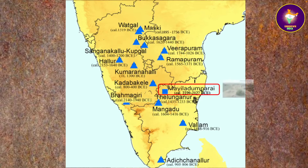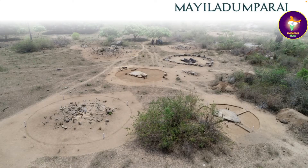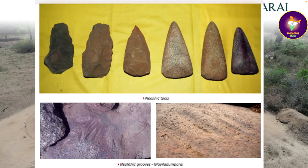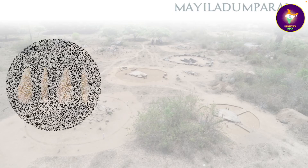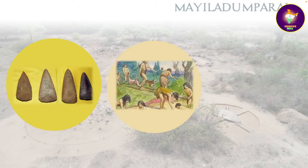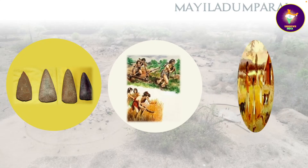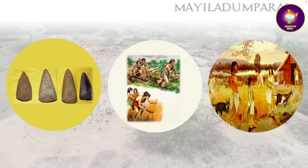Mailadumparai, which in Tamil literally means 'peacock dancing on a rock,' is a small hamlet located at the foothill about 3 km west of Togarapalli village in Bargur Taluk of Krishnagiri district of Tamil Nadu. Past excavations at Mailadumparai right from 1977 have yielded rich cultural clues of Tamil lives from the Paleolithic to historic periods. Neolithic stone tools and grooves to sharpen the tools had been found. The Neolithic age is characterized by the use of very sharp stone tools, introduction of farming, making of pottery, domestication of animals, and change from a hunter-gatherer lifestyle to one of settled habitat.